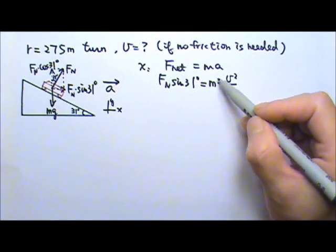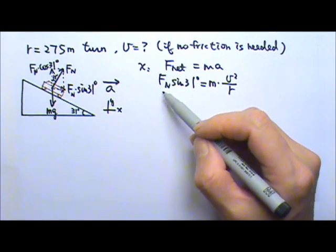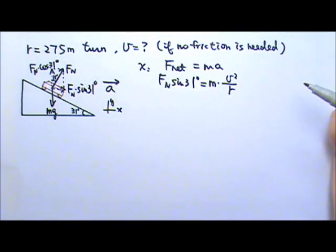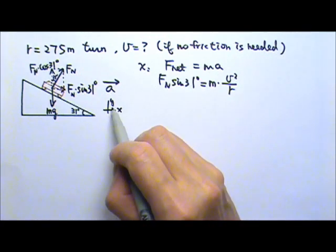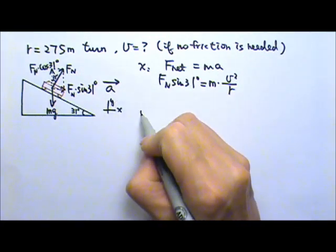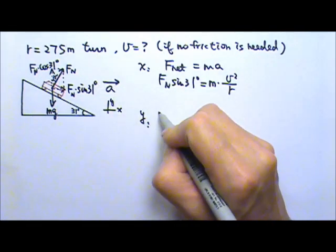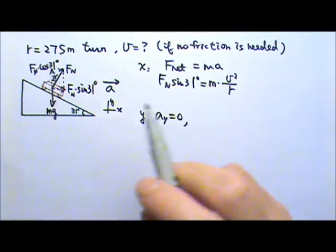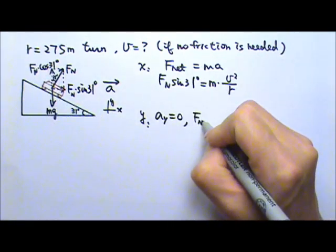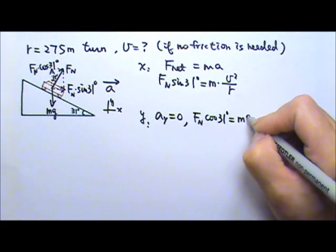Now it's possible that the mass can cancel. But we'll have to find normal force. Which means we have to write another equation. So that other equation to write is the force equation in the y direction. So in the y direction, there is no acceleration. The acceleration in the y direction is zero. That means the upward force and the downward force, they are equal. So Fn cosine 31 degrees equals to the downward Mg.